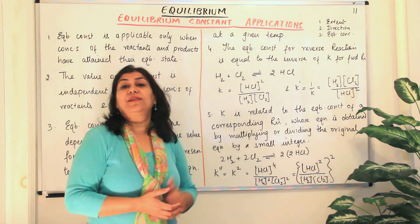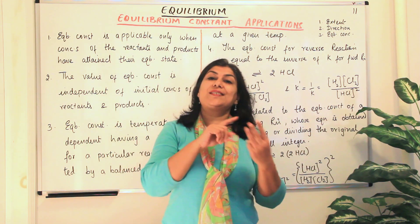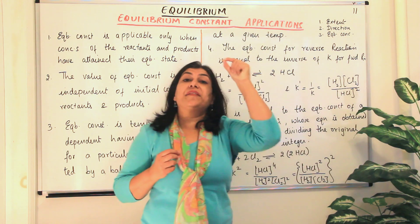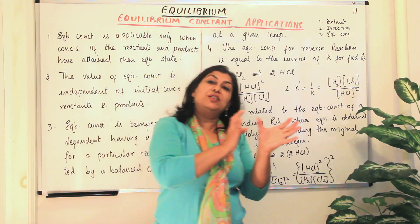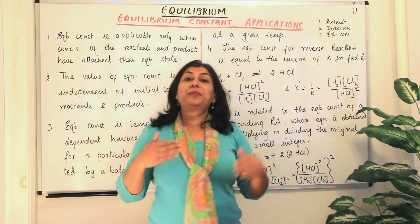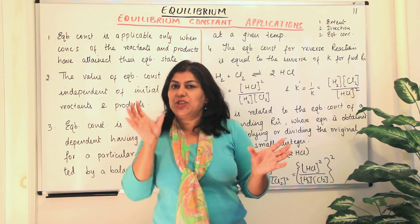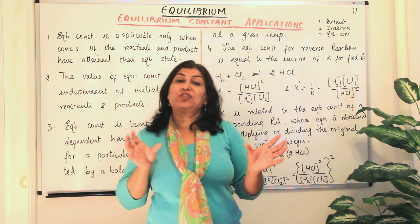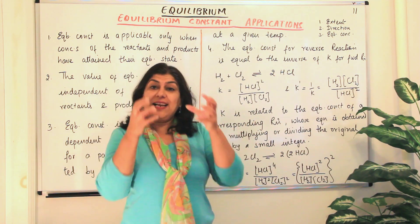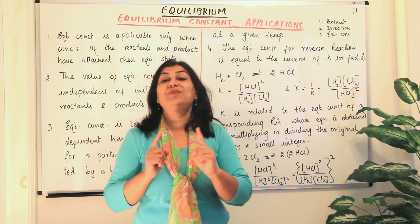So this is what you understand about the equilibrium constant. When we talk of applications of equilibrium constant, there are three areas. First, we use it to predict the extent of a reaction — whether the reaction has proceeded more towards the product side or has leaned more towards the reactant side. Second, you can predict the direction of the reaction: if you know the equilibrium constant and the concentrations at a particular time, you can tell whether the reaction is proceeding towards completion, towards equilibrium, or moving towards the reactants.